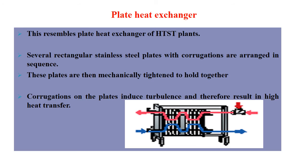Under the indirect heating system in UHT milk processing, the first option is the plate heat exchanger, which we have already learned in the HTST system. This resembles the plate heat exchanger of HTST plants. Several rectangular stainless steel plates with corrugations are arranged in sequence and mechanically tightened to hold together. The corrugations on the plates induce turbulence, resulting in high heat transfer, and also provide extra surface area that helps in quick transfer of heat.